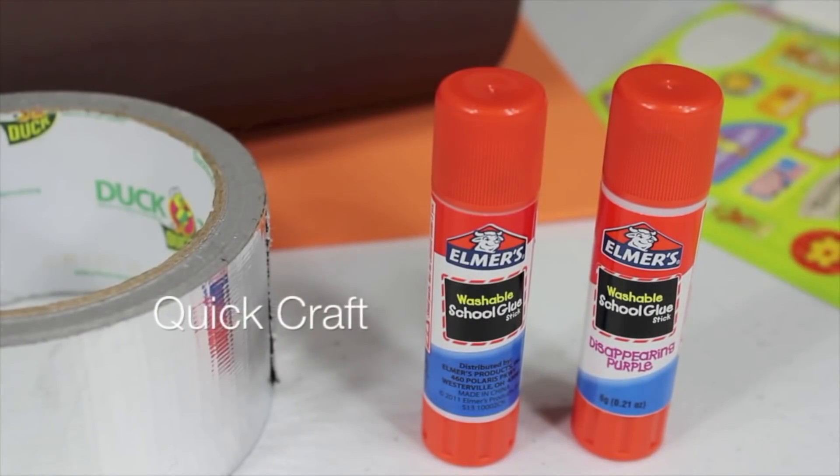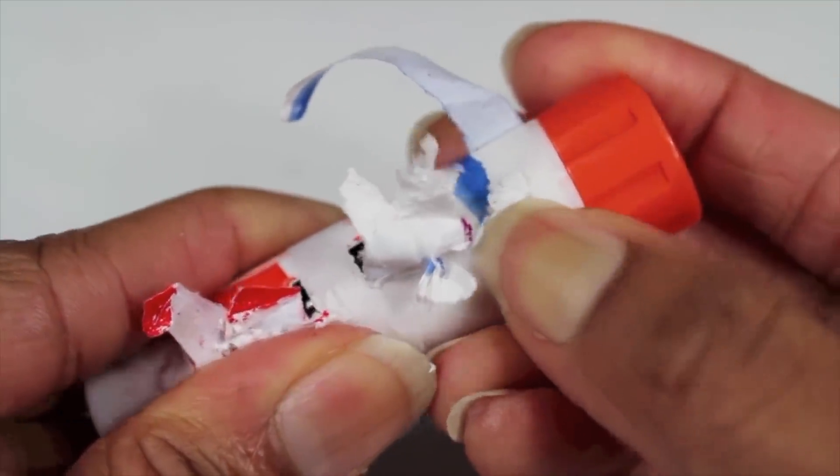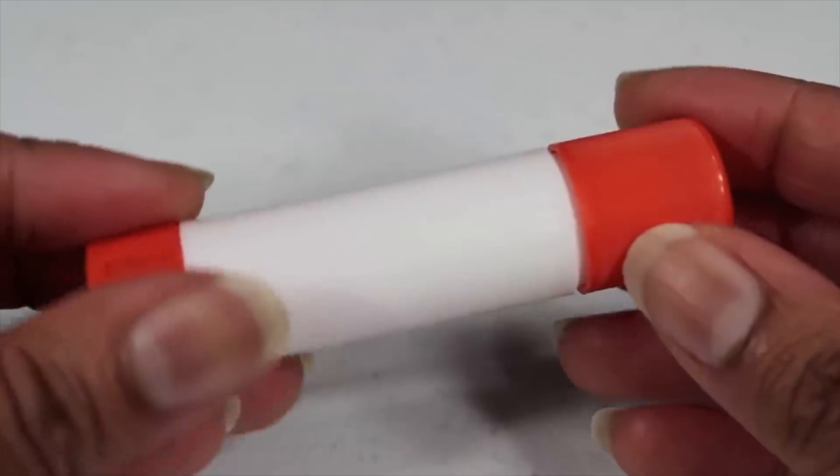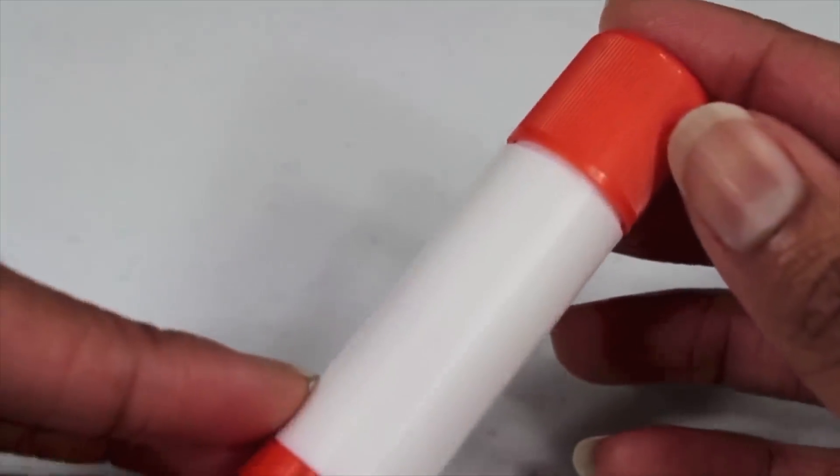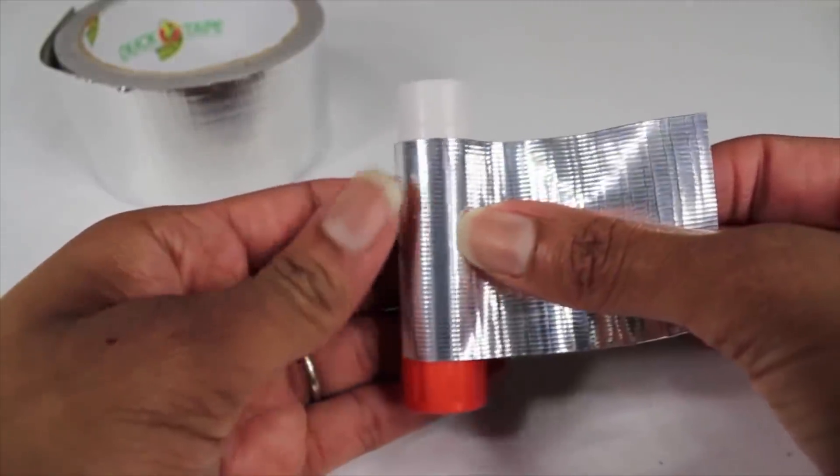I am going to make a thermos for an 18-inch doll using old glue sticks, stickers, craft foam, and chrome duct tape. I start by cleaning off my glue stick. Now I could leave it just like this, but I am going to wrap the center with a strip of metallic duct tape.